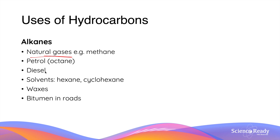In a more chemistry-related setting, hydrocarbons like hexane and cyclohexane are commonly used as solvents to dissolve non-polar substances. This is because hexane, cyclohexane and almost all hydrocarbons are non-polar compounds. In addition, waxes — for example those in candles — and the previously discussed bitumen in roads are also derived from alkanes.